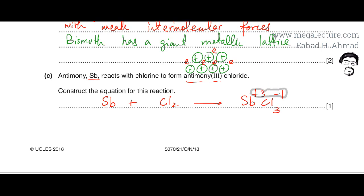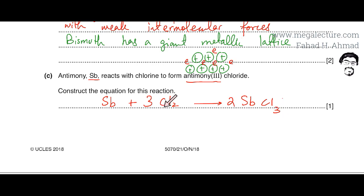Removing the charges, we balance the equation: there are 3 chlorines in SbCl3 and chlorine is diatomic (Cl2), so we multiply SbCl3 by 2 and Cl2 by 3, giving 6 chlorines on both sides. That gives 2 Sb on the right, so we need 2 Sb on the left. The balanced equation is: 2Sb + 3Cl2 → 2SbCl3.